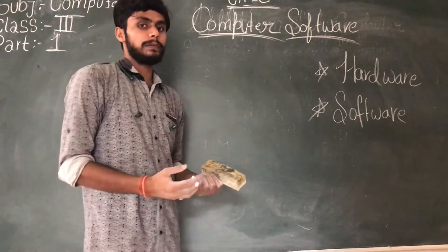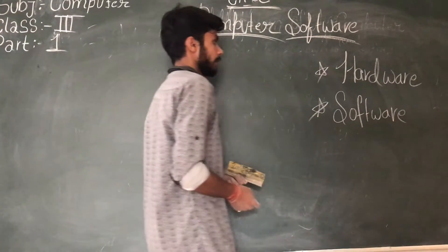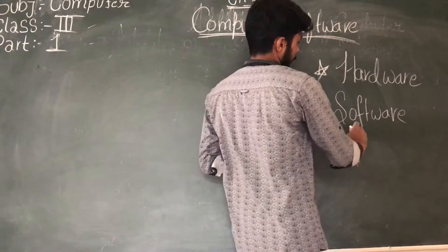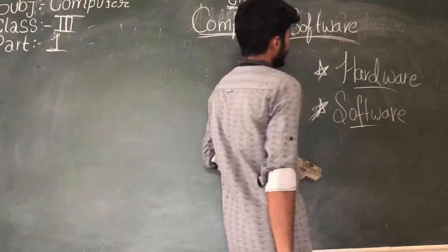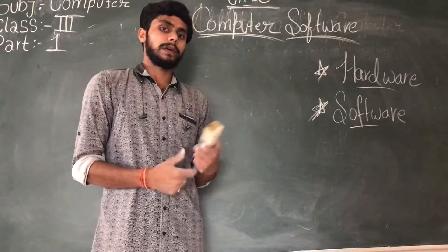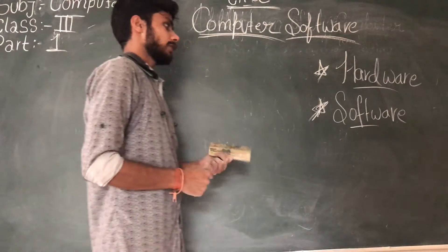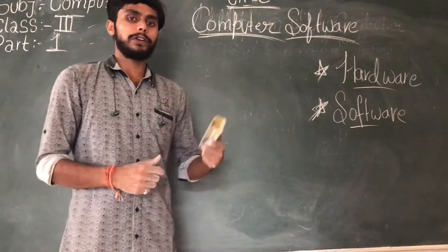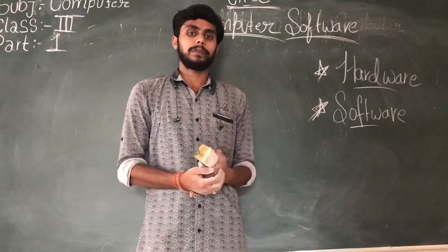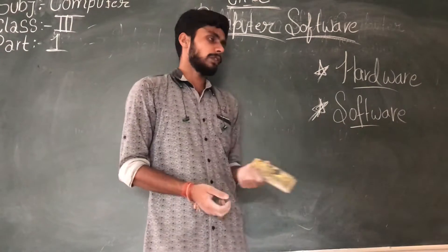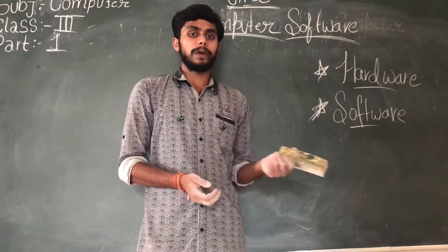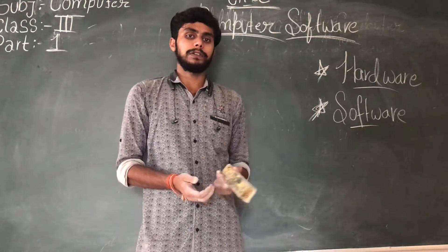First we focus on what we have learnt in this chapter. The two key points are hardware and software. In this video we will discuss what is hardware, what is software, what is the important role of hardware, and what is the role of software in our computer system. After that, we will discuss the types of hardware and software, and why we classify software into different types.